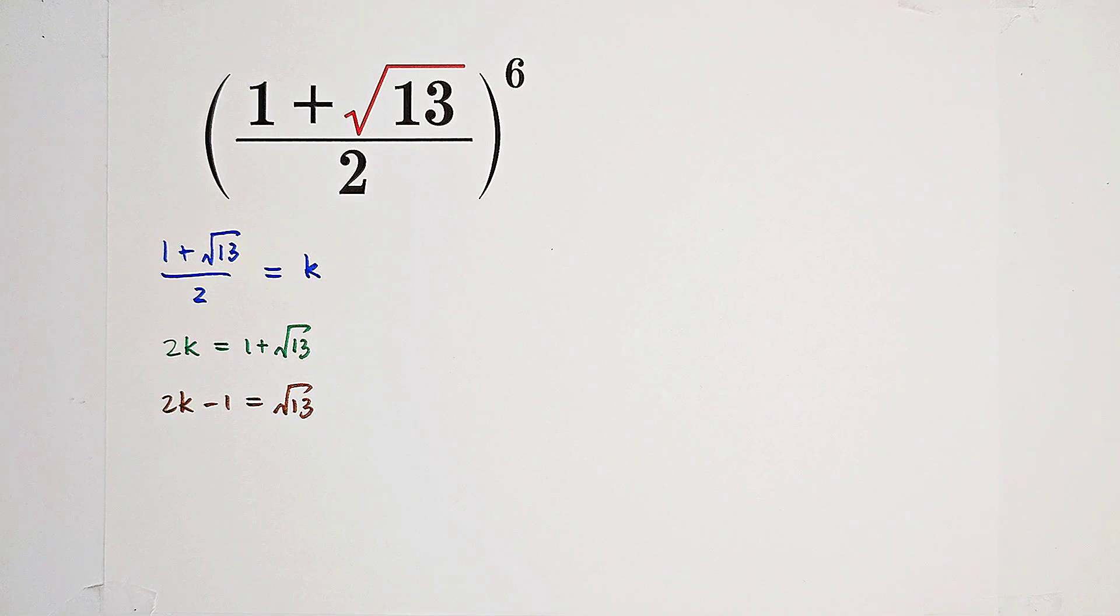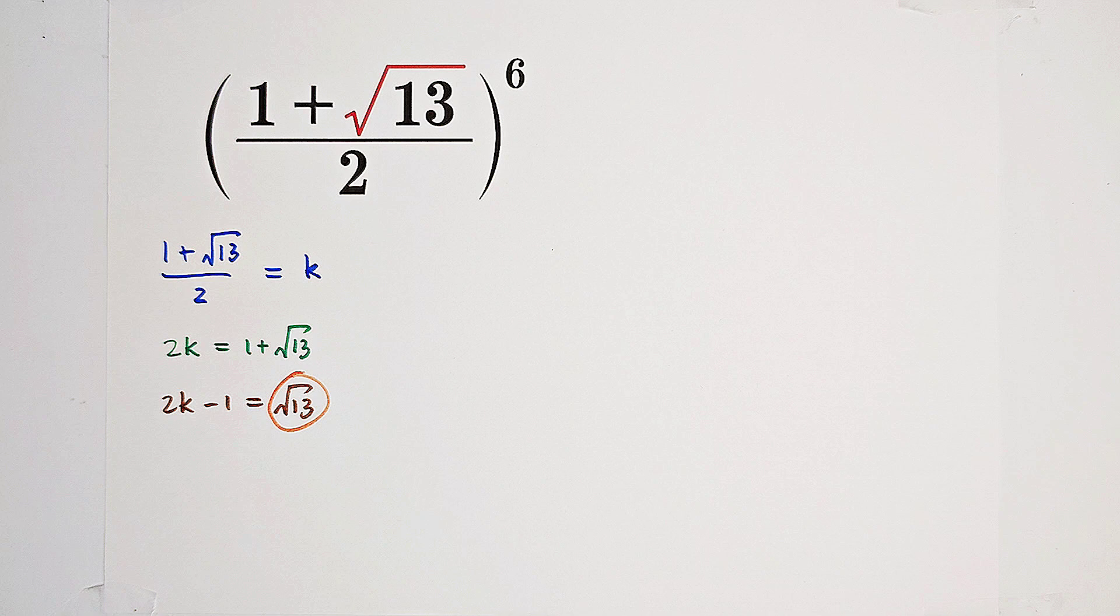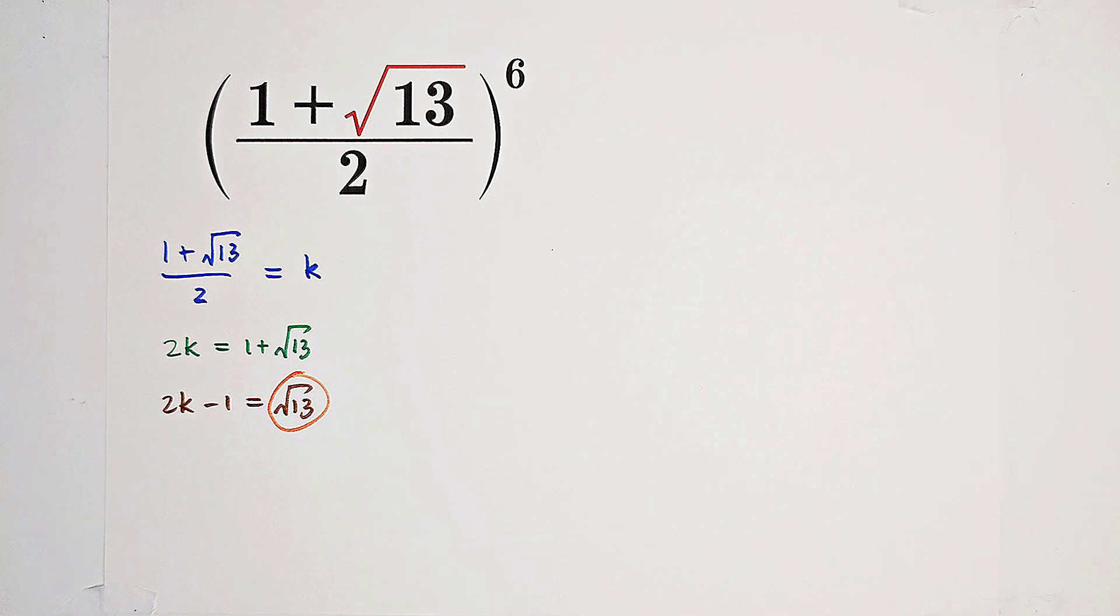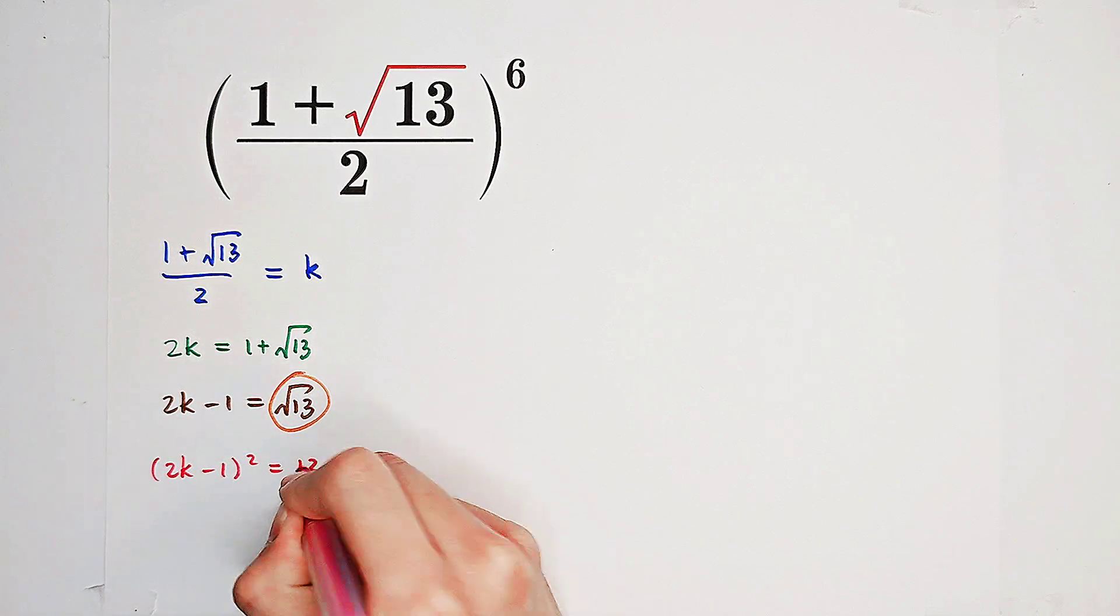And you can see on the left side we have our square root. For getting rid of it, we can square both sides and we get 2k minus 1 all squared equals 13.